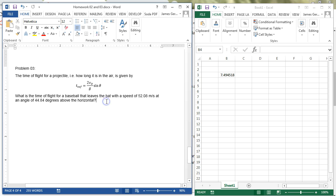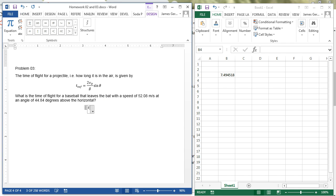All right, so we get time of flight is 2 times, let me use parentheses, 2 times 52.08 meters per second divided by 9.8 meters per second squared times the sine of 44.84 degrees equals...